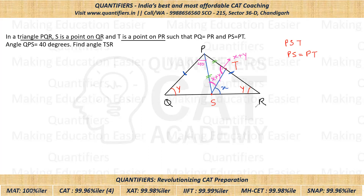Now look at triangle PQS. This complete angle — which is x plus y plus x — acts as an exterior angle for triangle PQS. The exterior angle equals the sum of the opposite interior angles, so: x plus y plus x equals 40 plus y.